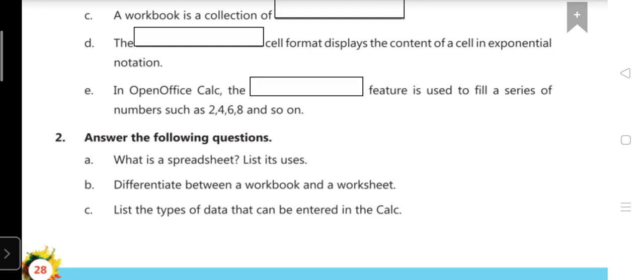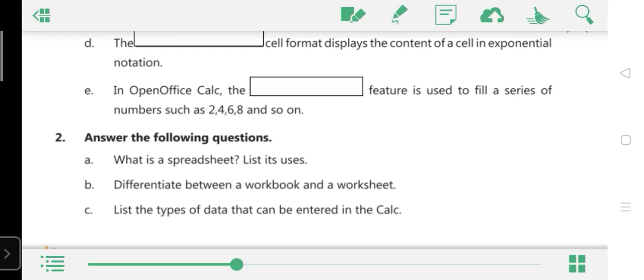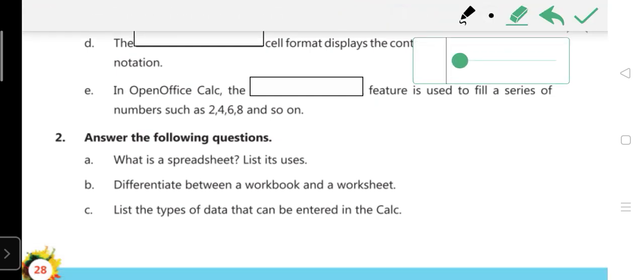Now question number 2. What is the spreadsheet? List its uses. Request to everyone, open page number 13. Answer is on page number 13. Already the definition is given. Underline it on page number 13. A spreadsheet is an application in the form of the grid or table that organize data into rows and columns. It is used to organize, manipulate and perform calculation on numerical data. That is the answer of A.